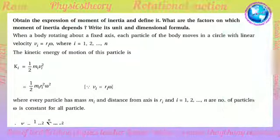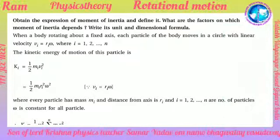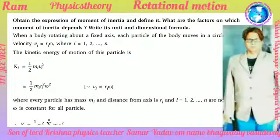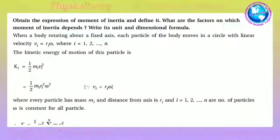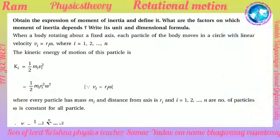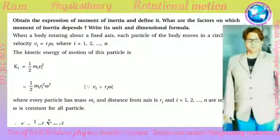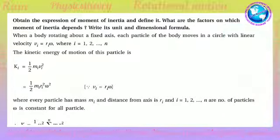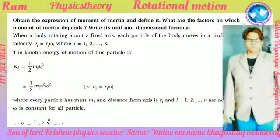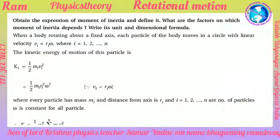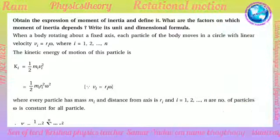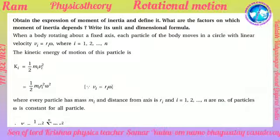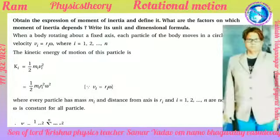Obtain the expression of moment of inertia and define it. What are the factors on which moment of inertia depends? Write its unit and dimension formula. When a body is rotating about a fixed axis, each particle of the body moves in a circle with linear velocity vi = ri*omega, where i = 1, 2, 3... and the kinetic energy of motion of this particle is ki = 1/2 mi vi^2.